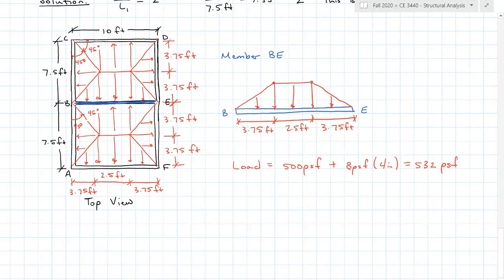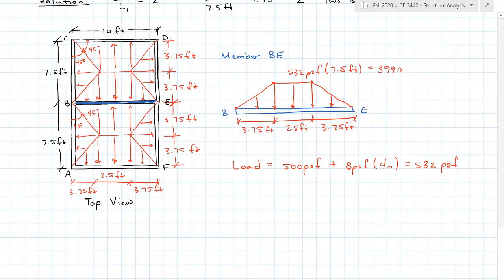I want to find the maximum values on member BE. BE is in the middle, so I have 3.75 feet coming from the top and 3.75 feet coming from the bottom, making a total tributary width of 7.5 feet. My maximum distributed load value is 532 PSF times that span of 7.5 feet, which gives a maximum of 3,990 pounds per foot as the peak of the trapezoidal load on member BE. Members AF and CD are getting load from only one side so they carry half that, but we're not asked about those.